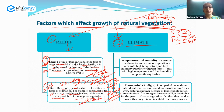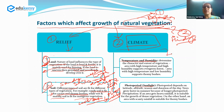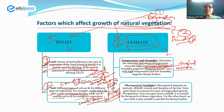The second major factor for natural vegetation growth is climate, which includes temperature, humidity, and photoperiod. Temperature and humidity determine the character and extent of vegetation. For example, an area with high temperature and high humidity supports evergreen forests, as found in tropical areas, while an area with high temperature and low humidity supports thorny bushes, as found in the Sahara Desert.